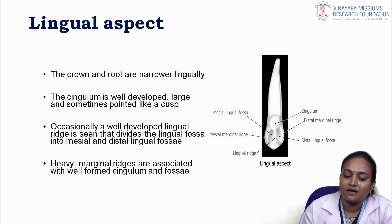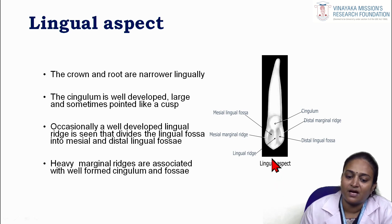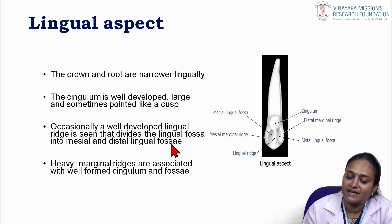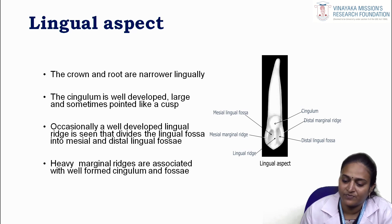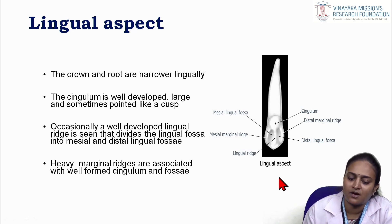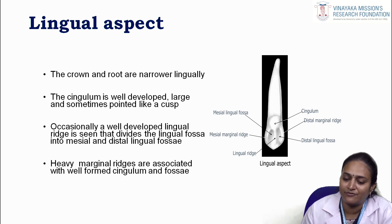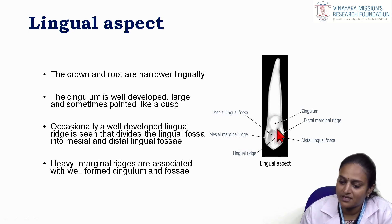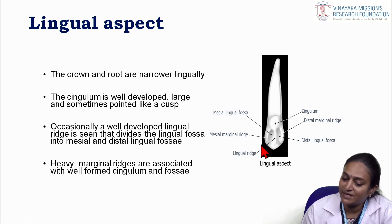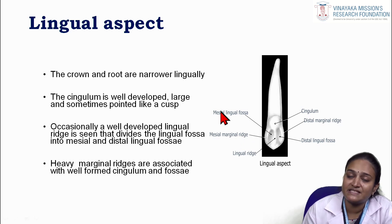Lingual aspect: the crown and root are narrower lingually. The cingulum is well developed and large, sometimes pointed like a cusp. Occasionally it has a well-developed lingual ridge that divides the lingual fossa into mesial and distal lingual fossae. Heavy marginal ridges are associated with the well-formed cingulum and fossae. From the lingual aspect you can appreciate the cingulum, distal marginal ridge, distal lingual fossa, lingual ridge, mesial marginal ridge, and mesial lingual fossa.